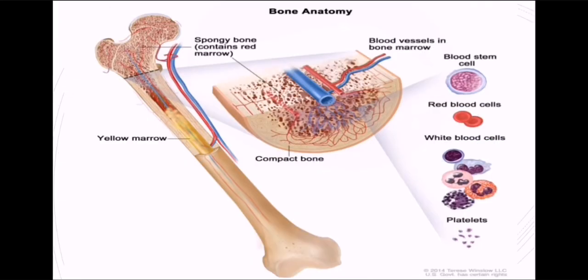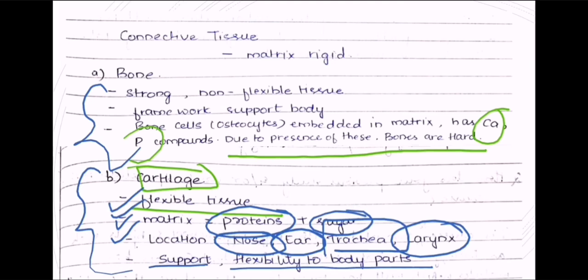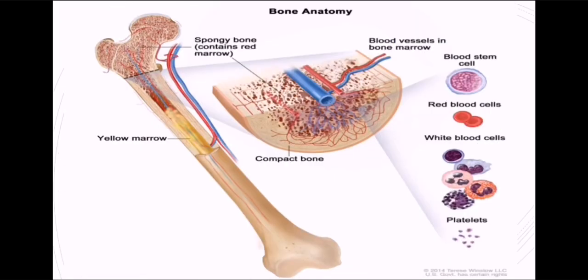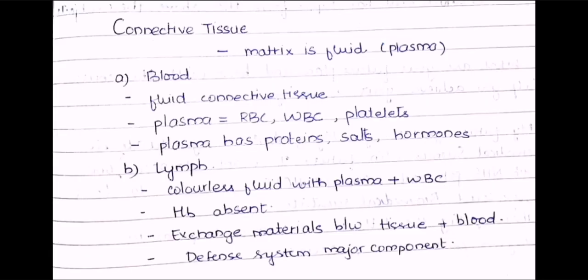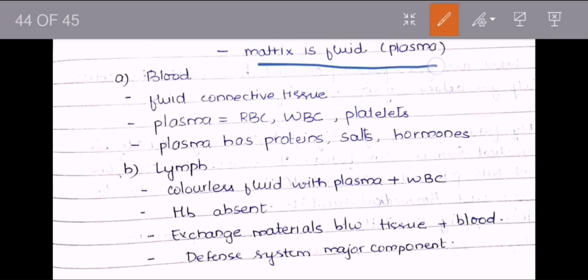Here you can see the bone anatomy. When you cut the bone, you see bone cells — also called osteocytes. In between these osteocytes, the matrix is filled with calcium and phosphorus compounds, which makes bone hard. The third classification of connective tissue is based on fluid matrix. If the matrix is fluid, this fluid is called plasma. That gives us blood and lymph.